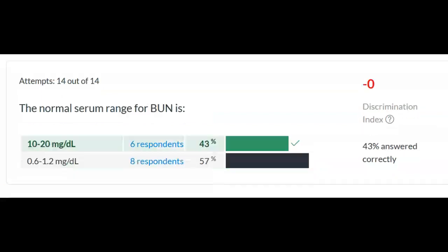The normal range of BUN is 10 to 20. This is a lab value we look at to determine kidney function. These lab values from that first homework assignment you need to know for all of pharmacology, for the rest of your nursing courses, and for your career as a nurse — get those lab values memorized.